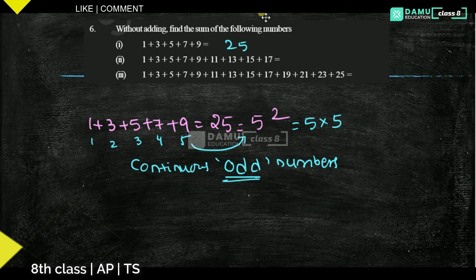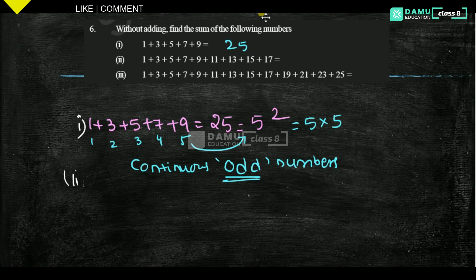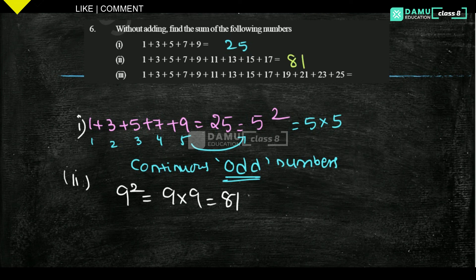For the next one, we count how many odd numbers there are: 1, 2, 3, 4, 5, 6, 7, 8, 9 — there are 9 terms. So the answer is 9 squared, which is 9 into 9 = 81.